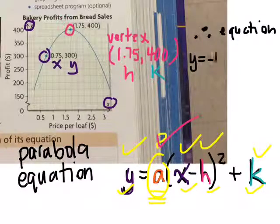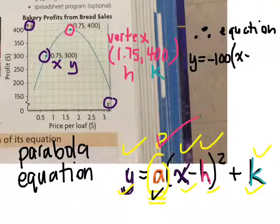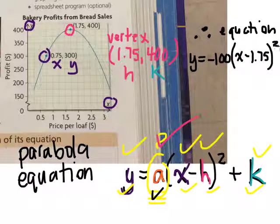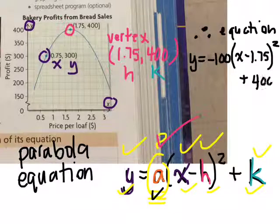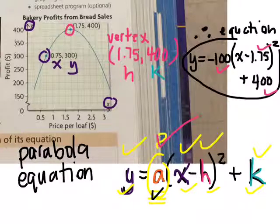Y equals negative 100. That's our a bracket. X minus 1.75, because that's our h. I'm running out of room. Squared. Sorry, I ran out of space. But plus 400, all written on the same line. Don't write it the way I wrote it. We replaced our a, our h, and our k, and that's how we determined the equation of that parabola.